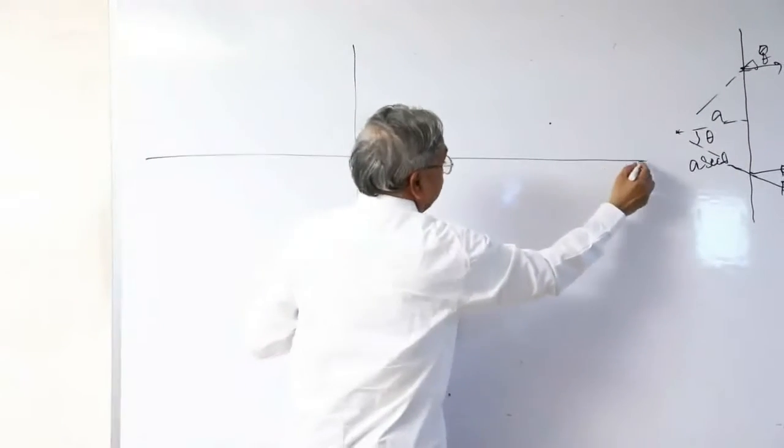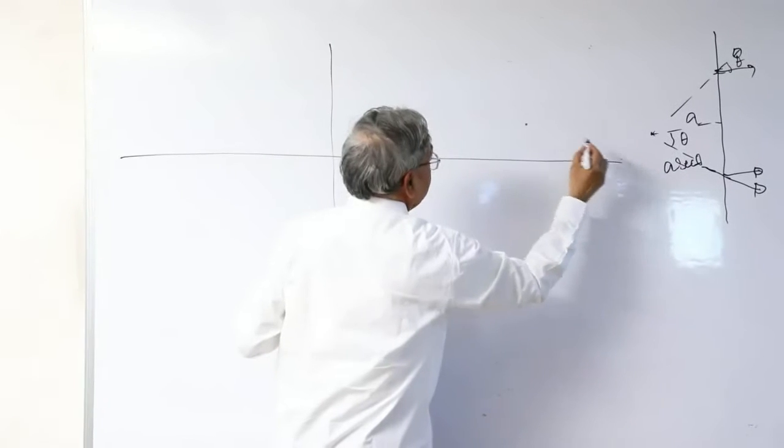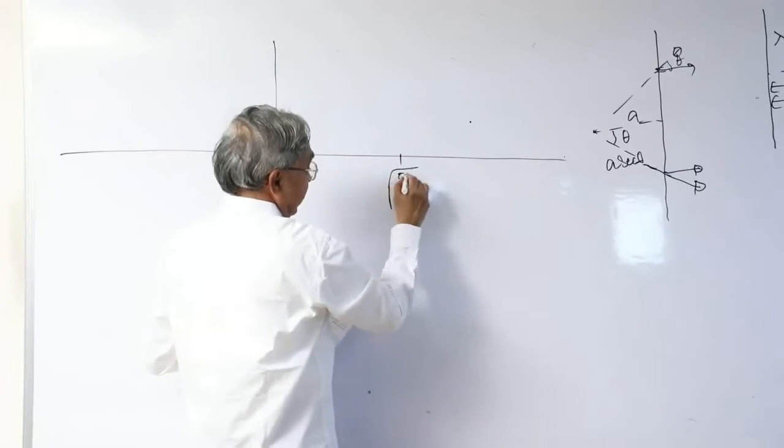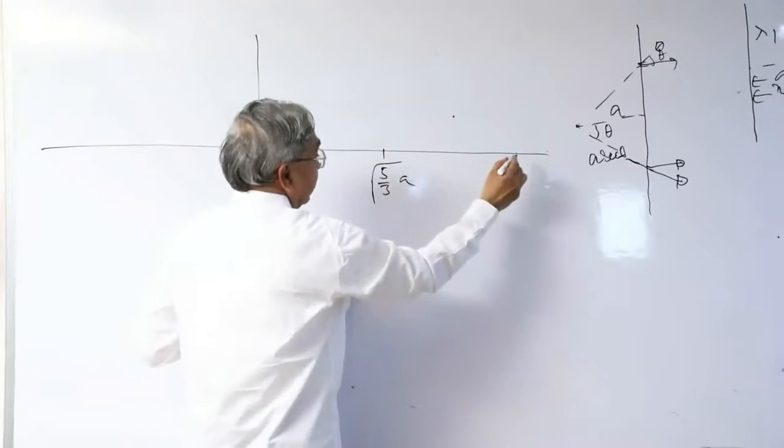At infinity, it is turning to 0. At under root 5 by 3 into a, it reaches a peak.